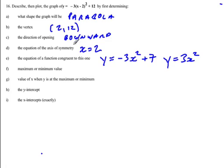Now, since this opens downward, it's going to have a maximum value. And the value of the x and y when it's a maximum or minimum, well, that's our vertex, so again, that's 2 and 12.